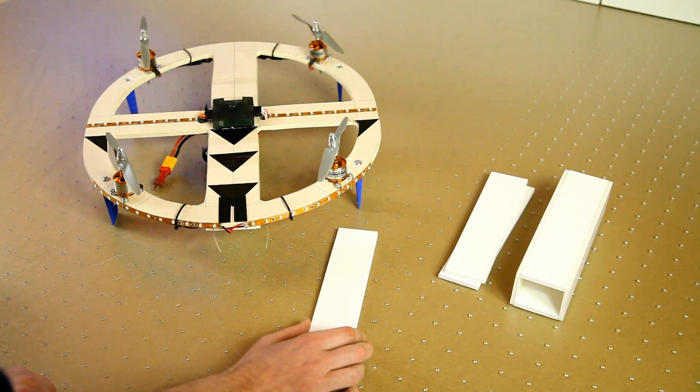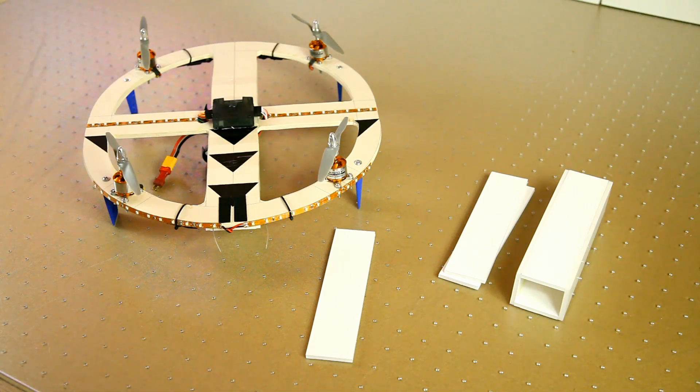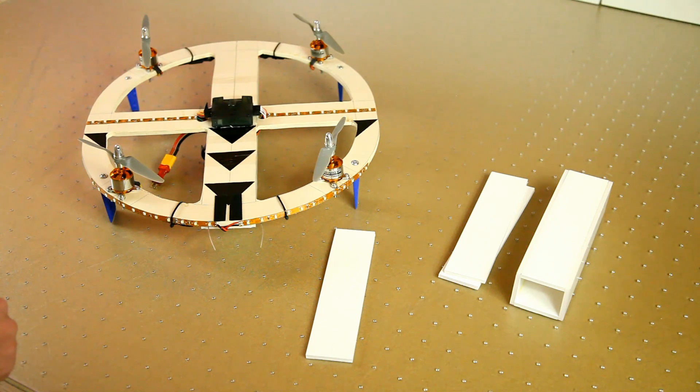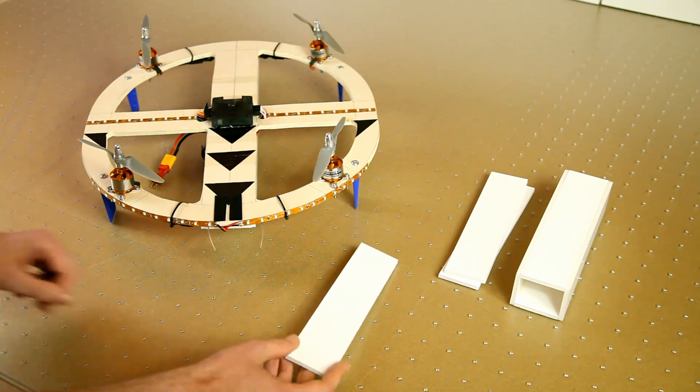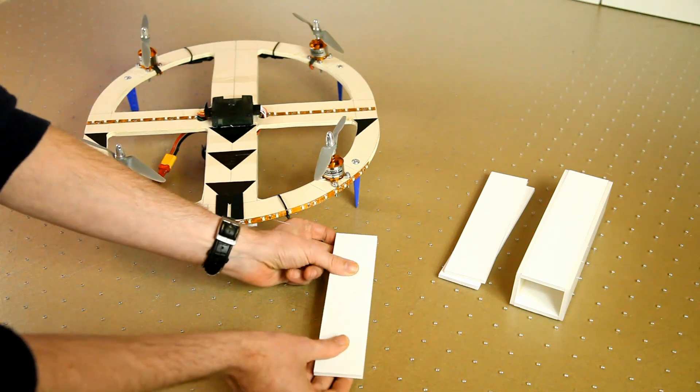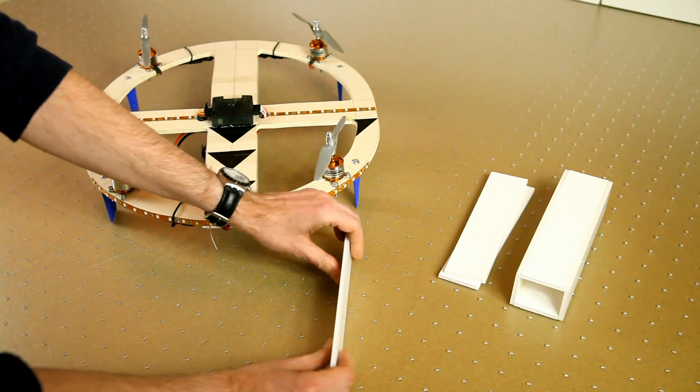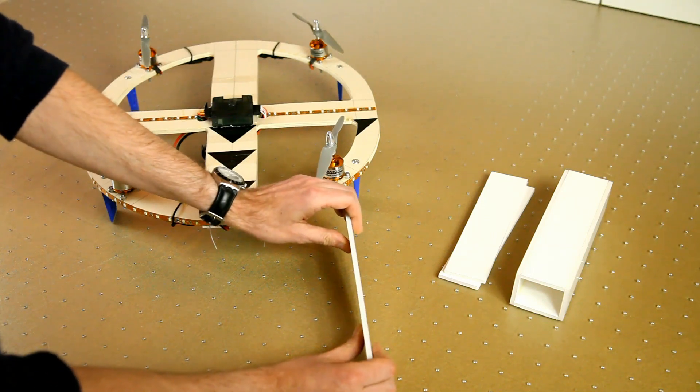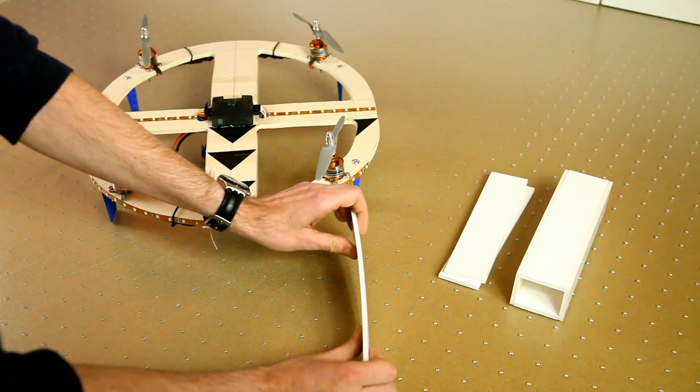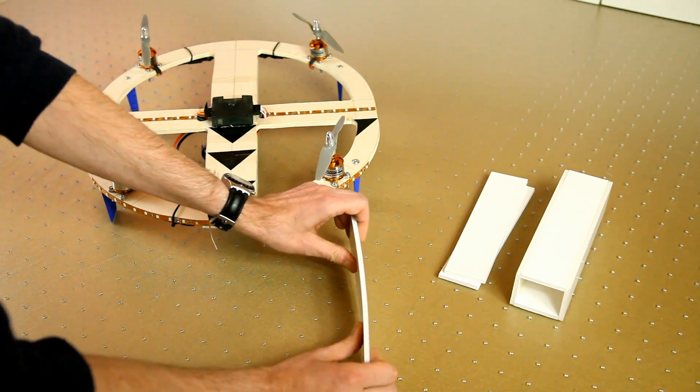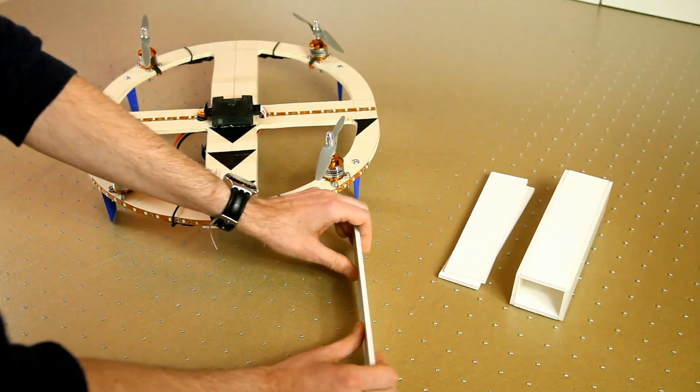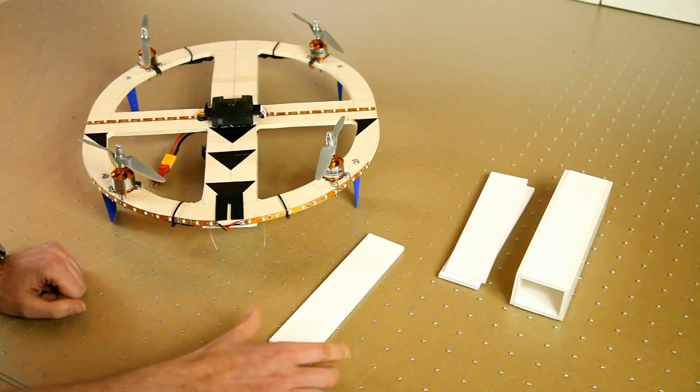Now you might wonder, what, a quadcopter out of foam board? Yeah, I really like doing things differently, but the main reason of course is weight. This is super light stuff, but it's not very stiff as you can see. I can bend it at least a little, not even as easy as I had thought, but for a quadcopter this is really not stiff enough.